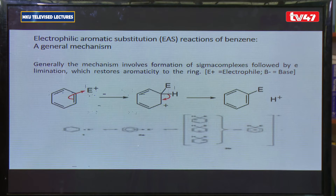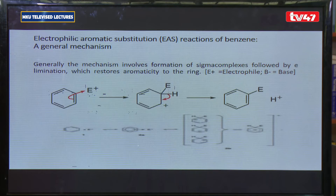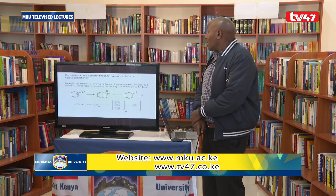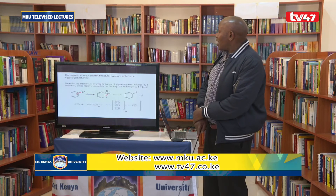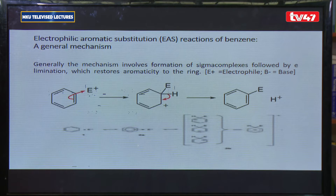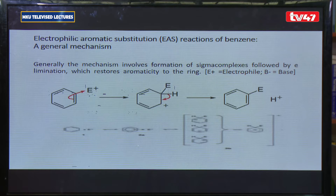Now we look at the general mechanism of electrophilic substitution reactions. The reduction reactions we examined are addition reactions in which we add hydrogen, similar to reactions of alkenes. However, benzene generally does not prefer addition reactions. Because benzene is a very stable molecule due to resonance and always tries to sustain its resonance structure, the most preferred reaction is substitution, where hydrogen is replaced by an electrophile — a positively charged group seeking electrons.